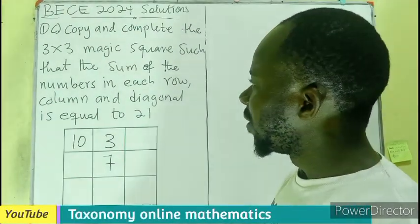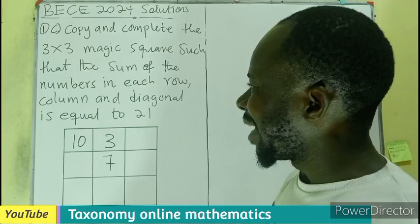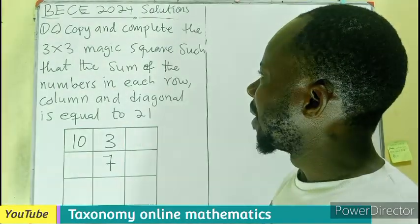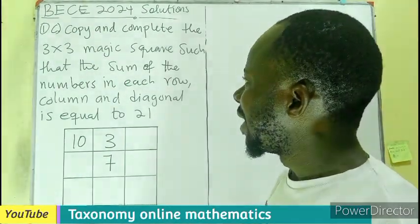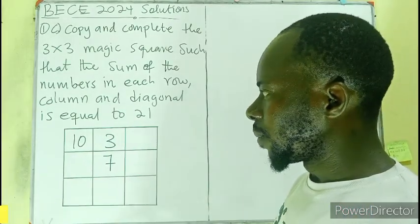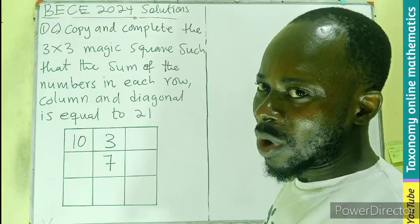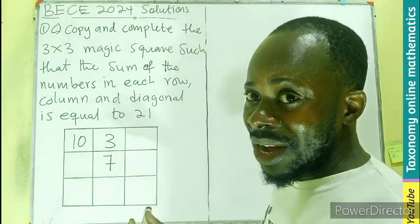Question number one, BECE 2024. We have to copy and complete the 3x3 magic square so that the sum of the numbers in each row, column and diagonal is equal to 21.